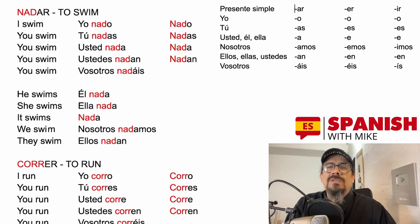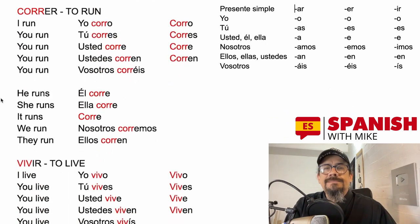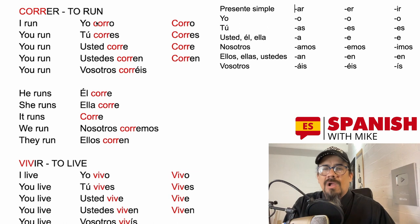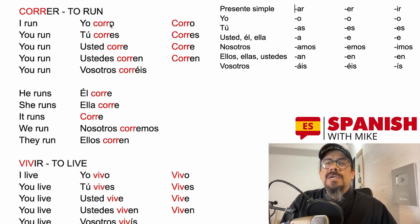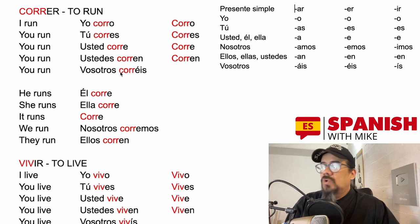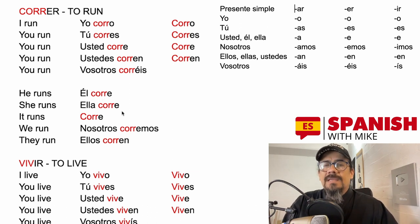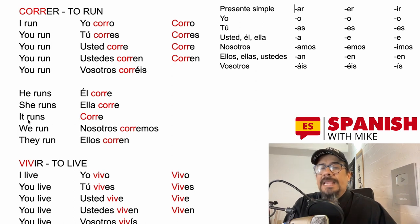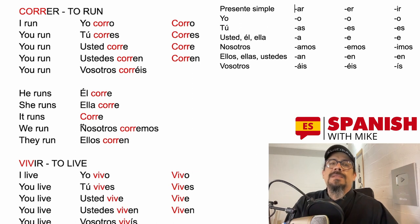Now let's move to correr — the second column, ER verbs. I run = yo corro. Notice how we keep the root and change the -er ending. You run = tú corres (informal). Usted corre (formal). Ustedes corren (plural). Vosotros corréis, if we were in Spain. He runs = él corre. She runs = ella corre. It runs = corre. Remember, in Spanish we can skip the subject, and for 'it' we never mention a subject pronoun. We run = nosotros corremos. They run = ellos corren.